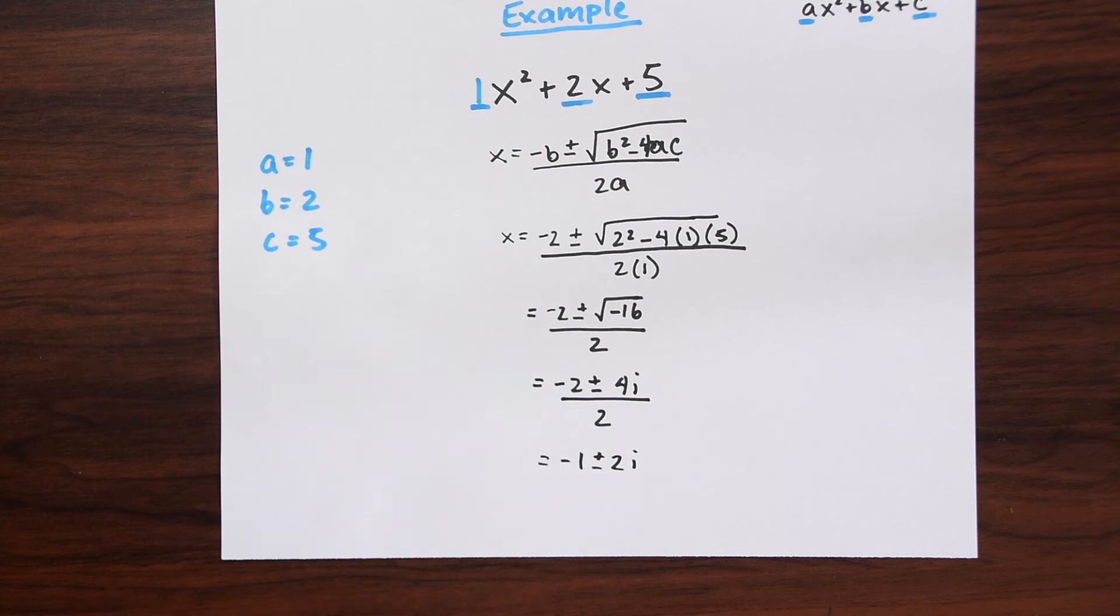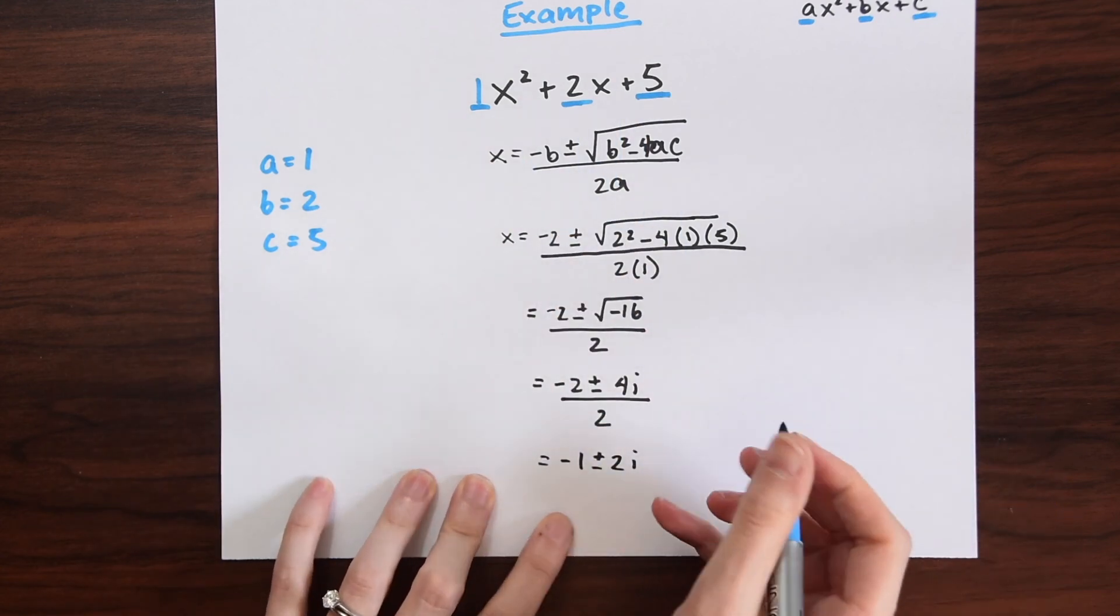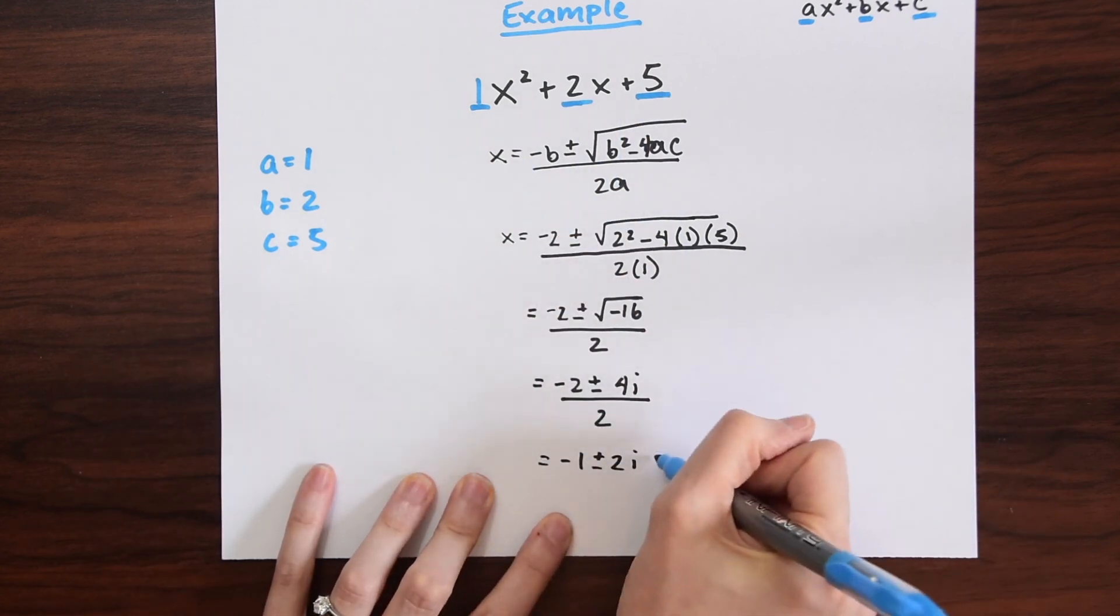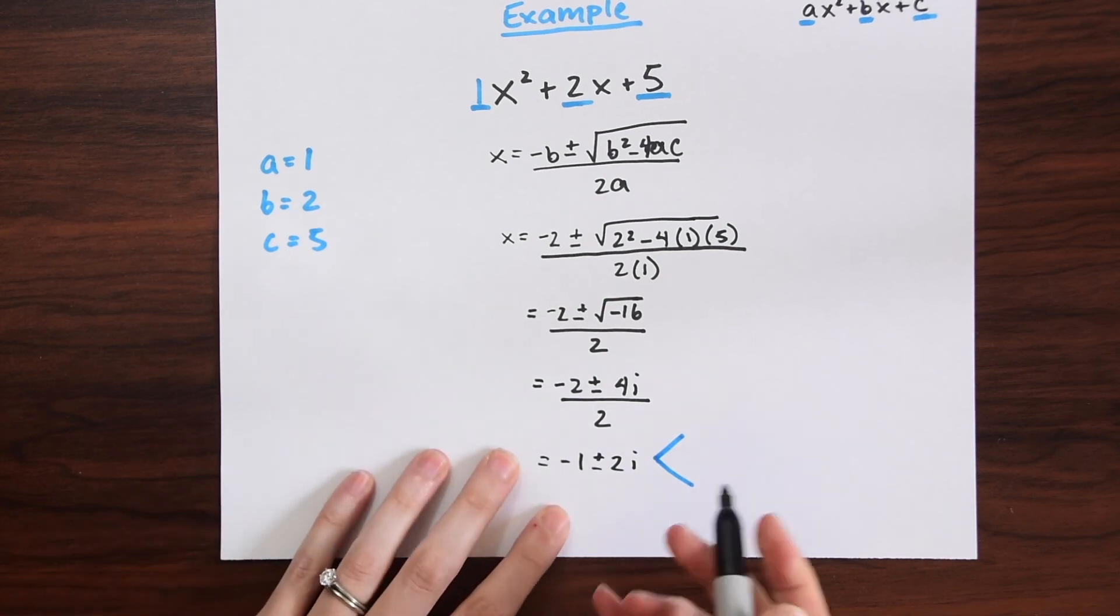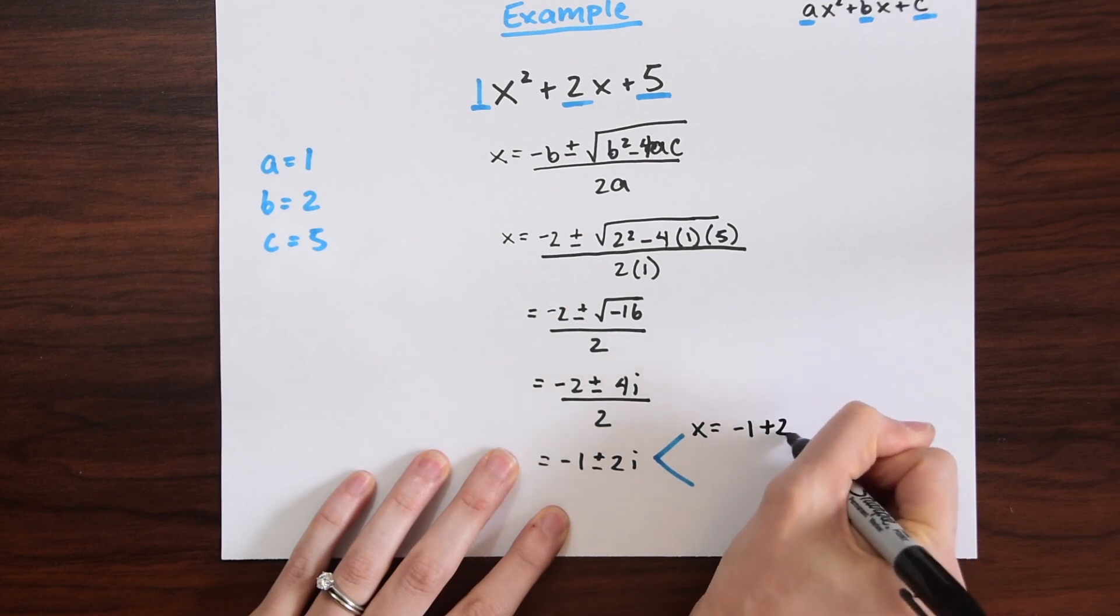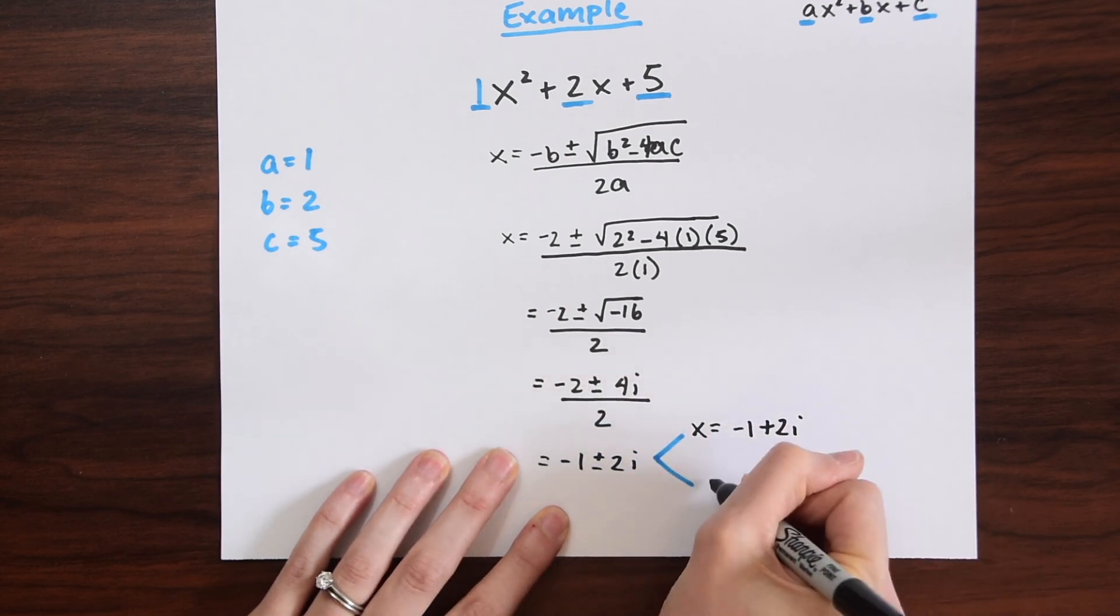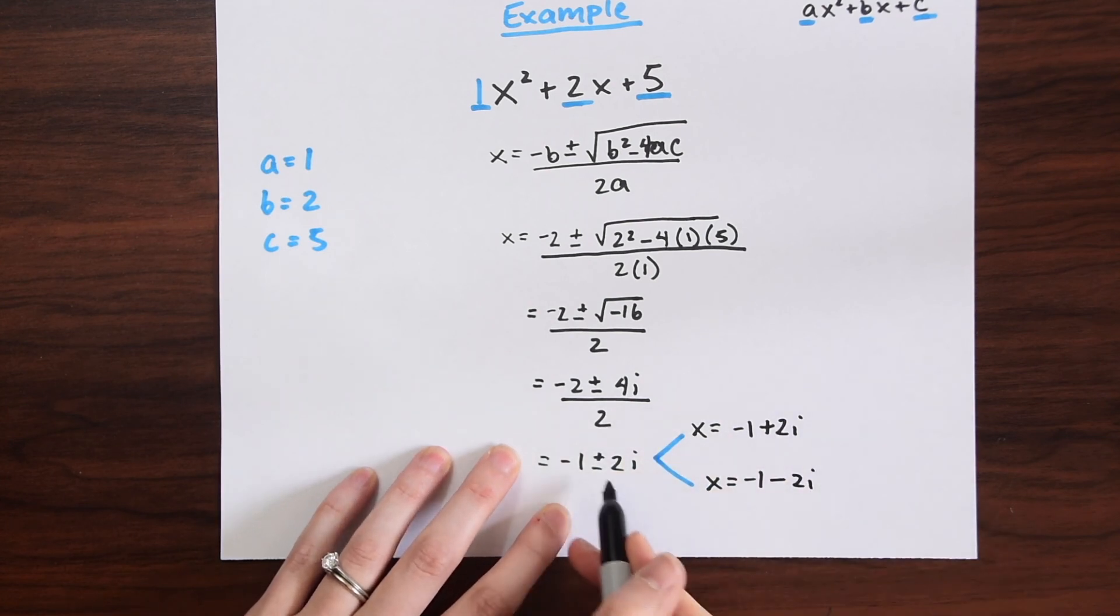We're almost done finding the x values to this equation here. We just need to split this into 2. The reason that we have plus or minus is because there are two answers here. We get x equals negative 1 plus 2i, and then we get x equals negative 1 minus 2i. That's how the answer splits up into this plus or minus.